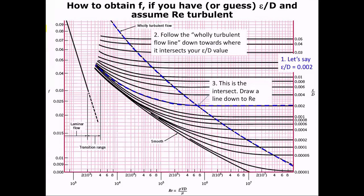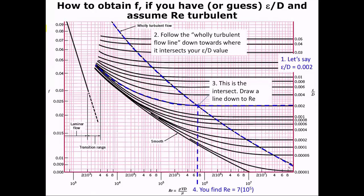Follow the wholly turbulent flow line downwards until you intersect your relative roughness value. Once the lines intersect, you can draw a straight line down to your Reynolds number. And you can get the Reynolds number for the given relative roughness. You can start with iterating. You can get velocity. You can get diameter and things like that.